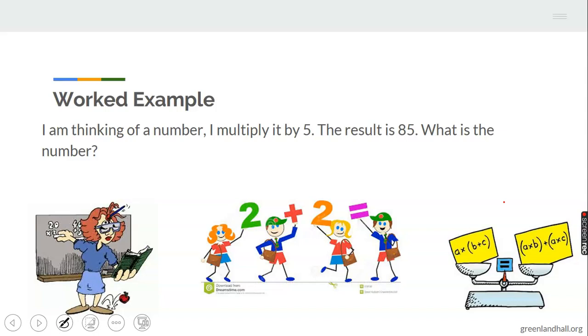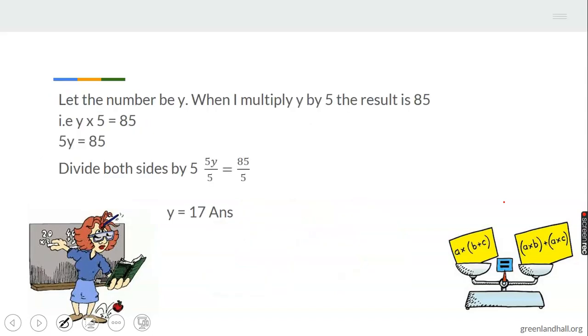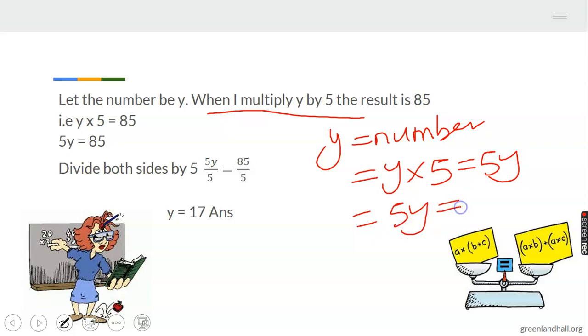Another example to sort it out for us. I am thinking of a number. I multiply it by five. The result is 85. What is the number? Boys and girls, you can even play around with these things. I'm thinking of a number. You can have a pair. You can just play around instead of you not doing anything. Math is fun, remember? So, I'm thinking of a number. I multiply it by five. The result is 85. What is the number? Let's see. Now, let the number be y. I'm thinking of y. And when I multiply y by five, the result will give me 85. So, y equals the number, or we can say number equals y. Now, the next step says y times 5. This will give me 5y. When I multiply, the result, so it equals 5y. The result is 85. I'm looking for the number.